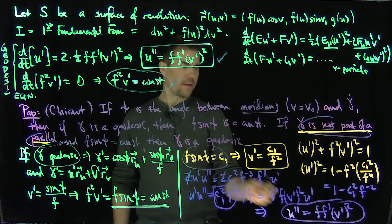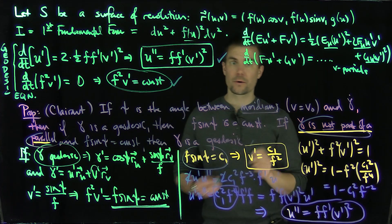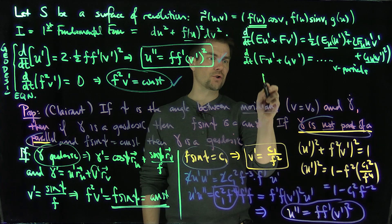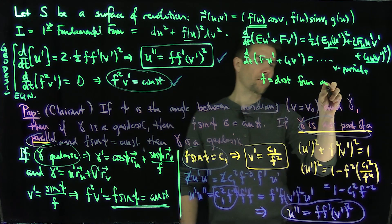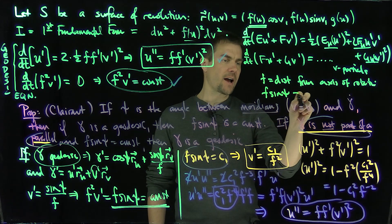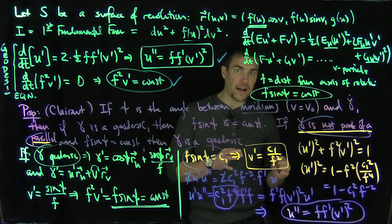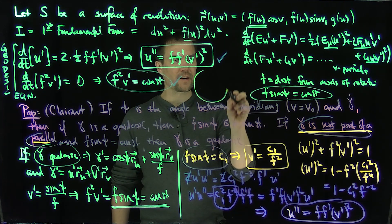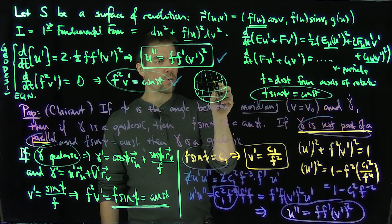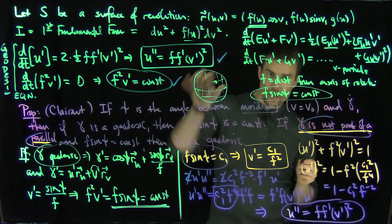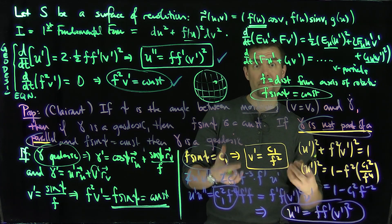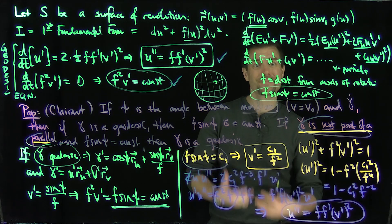The conclusion is that if f·sin(ψ) is constant, then γ is a geodesic — that's Clairaut's relationship. This is very useful because f is the distance from the axis of rotation, so the condition f·sin(ψ) = constant is often easy to verify. It gives deep geometric intuition, for example confirming great circles as geodesics on a sphere, without solving a nonlinear system of second-order differential equations. Thank you very much.